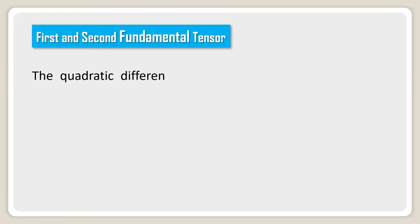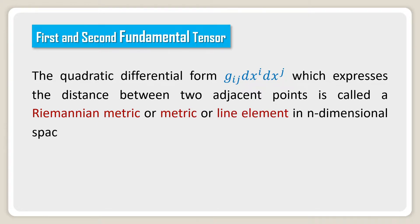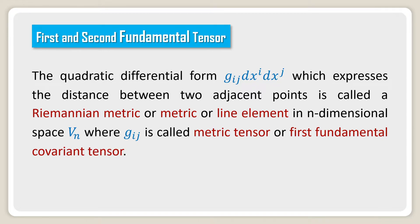First and second fundamental tensor. The quadratic differential form g_ij dx^i dx^j which expresses the distance between two adjacent points is called a Riemannian metric or metric or line element in n-dimensional space V_n, where g_ij is called the metric tensor or first fundamental covariant tensor.